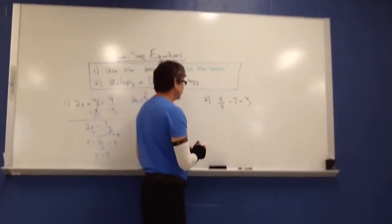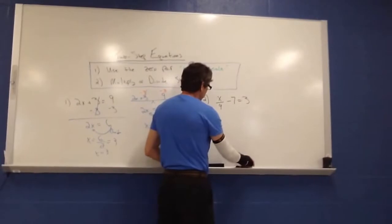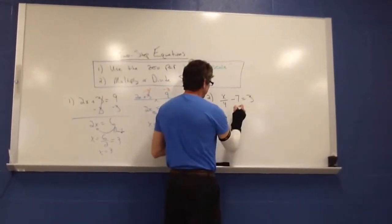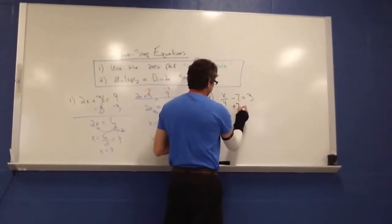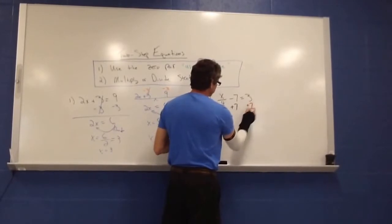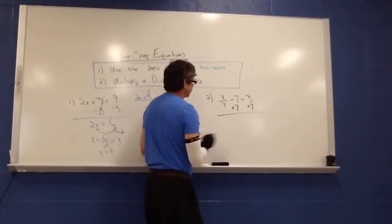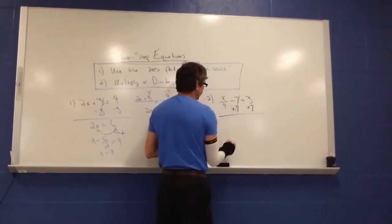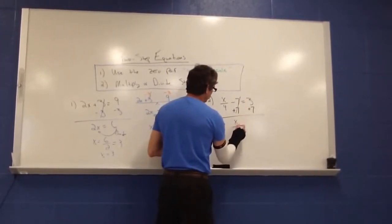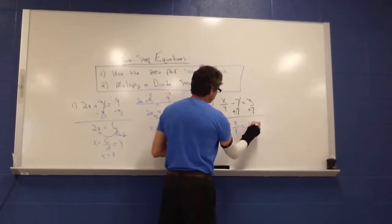So when I see this negative 7, what I can do is use its zero pair of adding a 7 to both sides. So what we do then see is these will then zero out. You have then x over 4 is equal to 10.